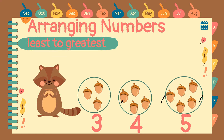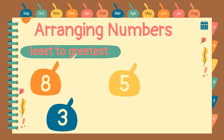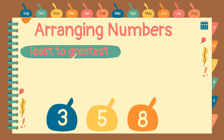So the numbers are arranged from least to greatest: we have 3, 4, and 5. Next, let's have these numbers — 8, 3, and 5 — and arrange them from least to greatest. Number 3 is the least number. Number 5 is the next number. And the greatest number is 8. So arranged from least to greatest, we have 3, 5, then 8.